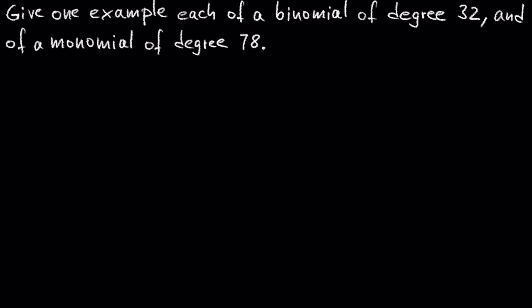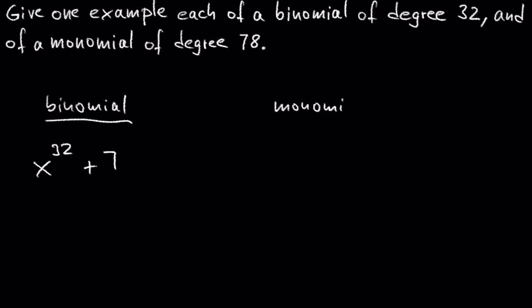Let's look at the next exercise: give one example each of a binomial of degree 32 and of a monomial of degree 78. A binomial has two terms, so we can write for example x raised to 32 plus 7. A monomial has one term, so we can write x raised to 78.